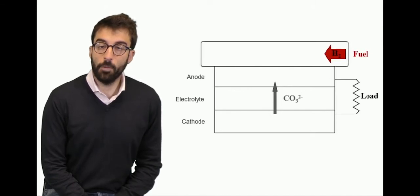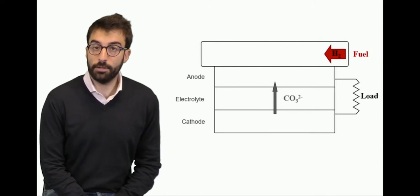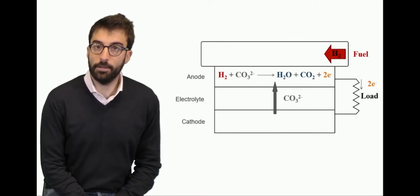If we look to the anode, we mainly have hydrogen as a potential fuel that reacts with carbonate to produce steam and carbon dioxide, plus of course the electrons that supply the electrical circuit outside. What is interesting is that the product of this process is not only steam but also carbon dioxide.